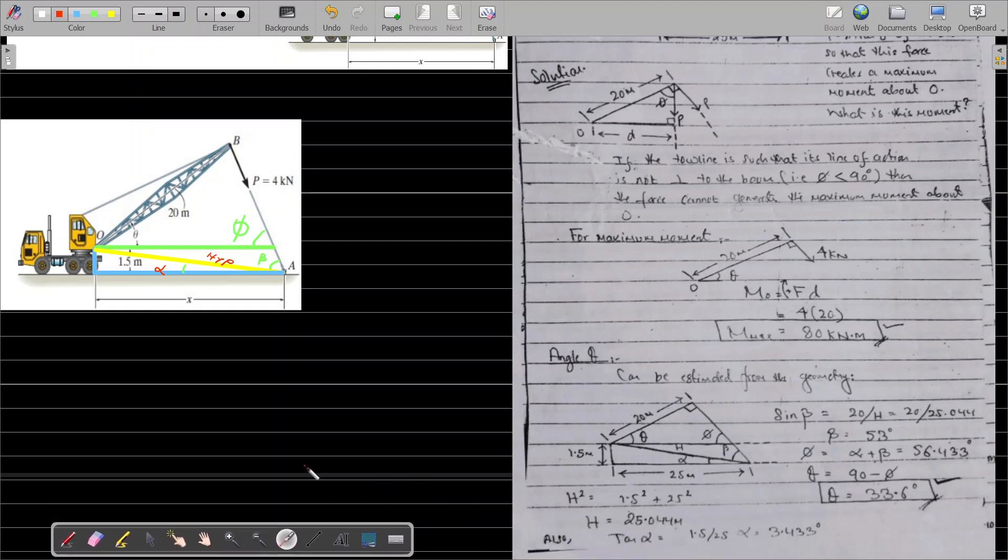This is our hypotenuse. Moving along the blue line, x is 25 meters. The vertical height of this triangle is 1.5 meters. We can calculate alpha and the hypotenuse. Hypotenuse squared equals 1.5 squared plus 25 squared, so h equals 25.044 meters.